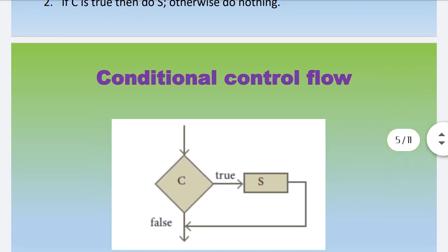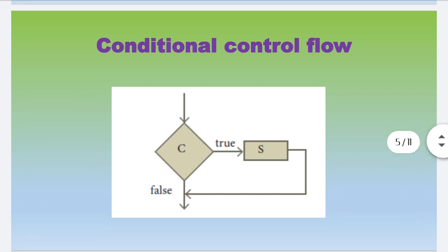Next we are going to see the flowchart. In the diagram, there is only a decision and a statement. If the condition is true, the statement executes. If not, nothing happens — whatever statement is inside the if, that alone executes. This is the conditional statement.